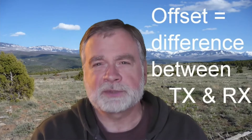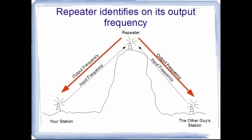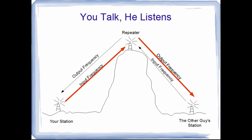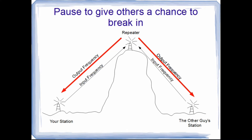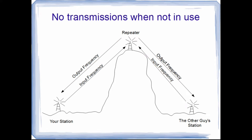Now, the next thing we need to know is offset. The offset is the difference between the frequency that you transmit and the frequency that you receive. Your 2-meter rig or 440 rig will show the frequency at which it will receive, and repeaters are listed in directories according to the frequency you will receive. You transmit on a different frequency. Let's take a look at some charts. A repeater might be up on a mountaintop, and you're trying to talk to somebody on the other side of the mountain. The repeater identifies on the output frequency, which both of you can hear. You transmit on the input frequency, and the other station listens on the output frequency. There's a pause to give others a chance to break in, and then the other station transmits on the input frequency while you receive on the output frequency. And that's all there is to it.